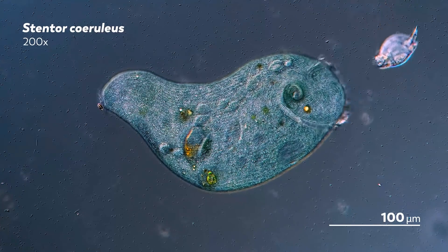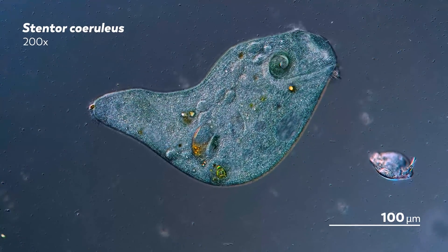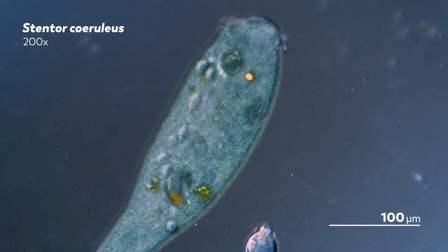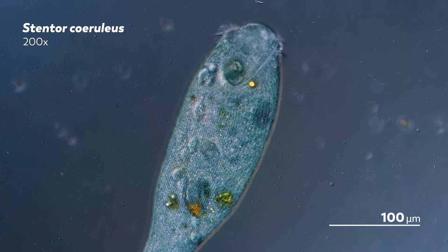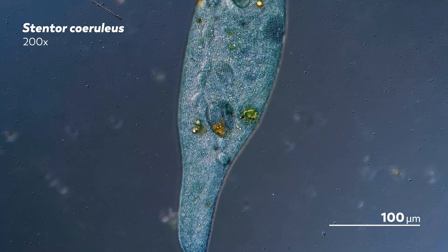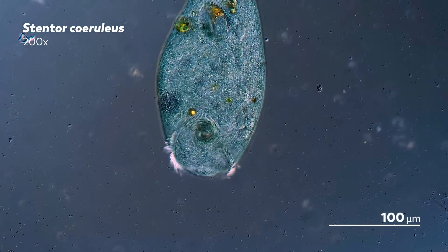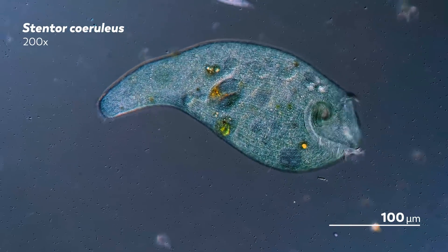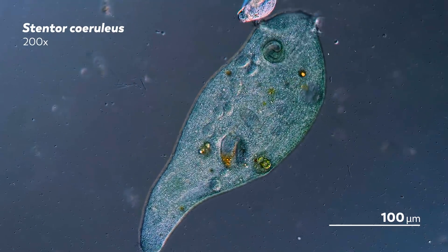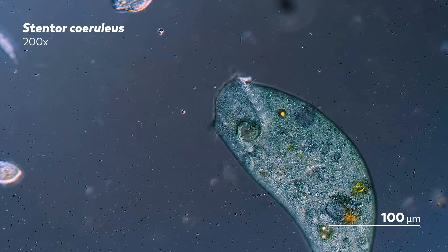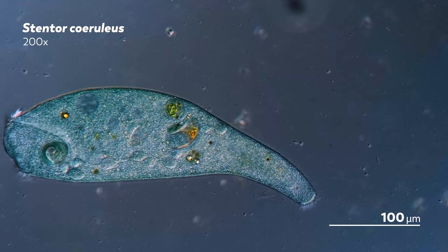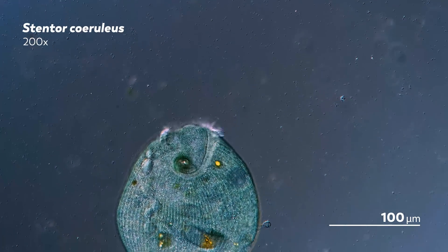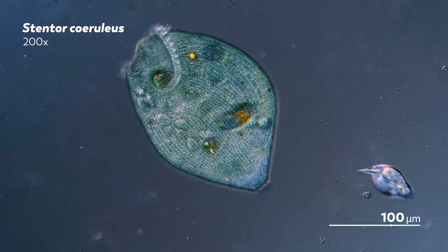Technically, Differential Interference Contrast is not a type of microscope. Rather, it's a method that enhances contrast. And as you can see, the final product is an image that seems almost three-dimensional. Just watch this stentocoruleus as it swims across the slide. Its cilia are so prominent that it almost feels like you can touch their vibrating fuzziness. And the striations down its body are so sharp that when the stentor contracts, it's like you can feel it pushing inward and then back out again.